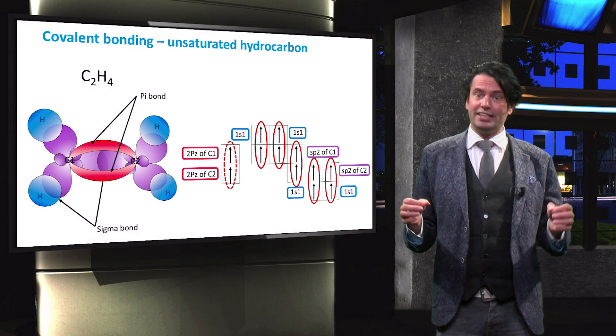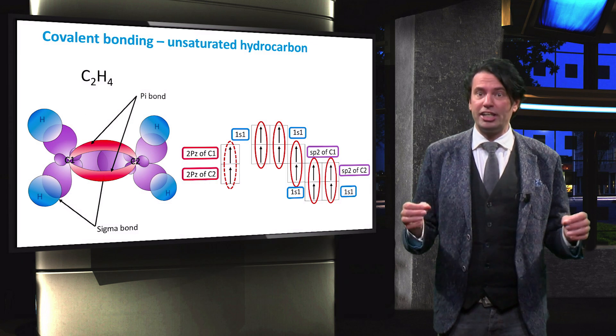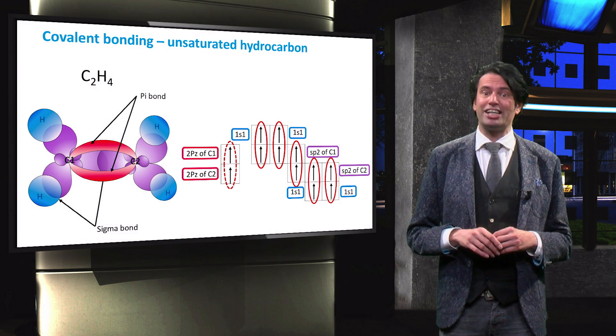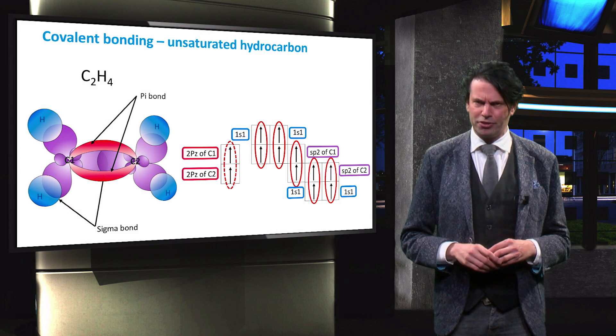This way the electrons in these p orbitals are shared between each other. Pi bonds are the basis for charge carrier transport in organic photovoltaic materials.